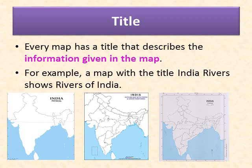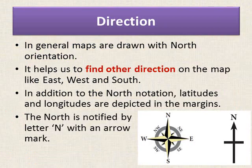The next important element is direction. In general, maps are drawn with north orientation. The compass points towards north, and this helps us find other directions on the map — like east, west, and south. In addition to north orientation, latitudes and longitudes are depicted in the margins. North is notified by the letter N with an arrow mark.